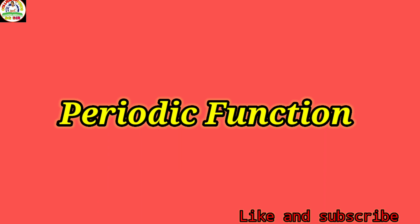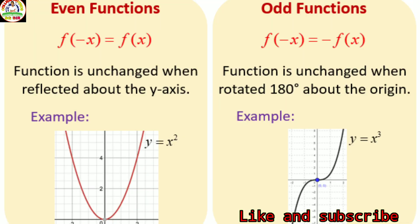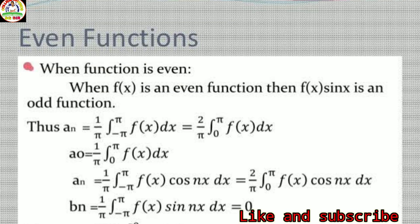Now we discuss periodic functions. A function is said to be periodic if it repeats after a particular interval. For example, sin(x), cos(x), and tan(x) are all periodic functions. Now we discuss one important concept for calculating Fourier coefficients a₀, aₙ, and bₙ for even and odd functions.